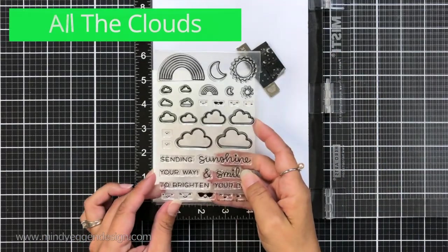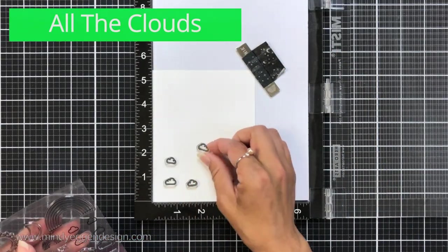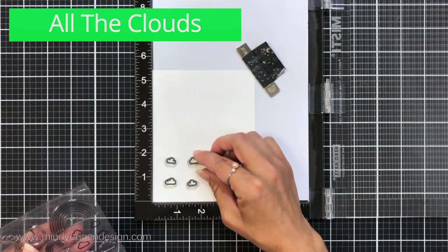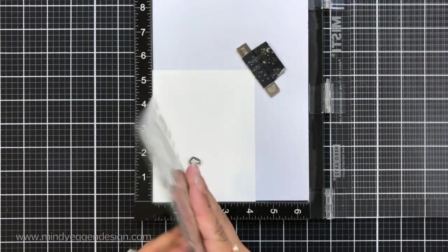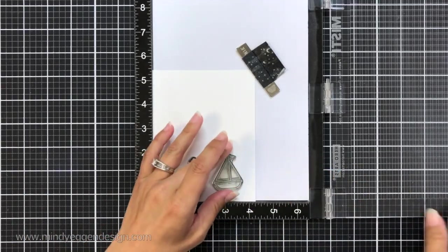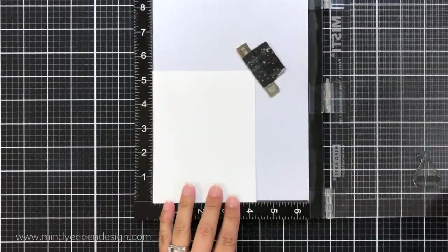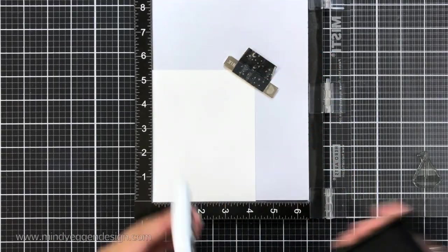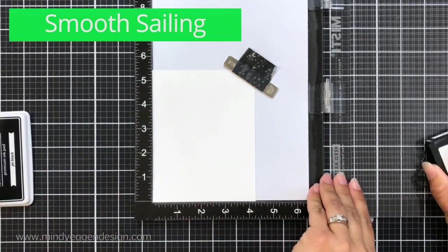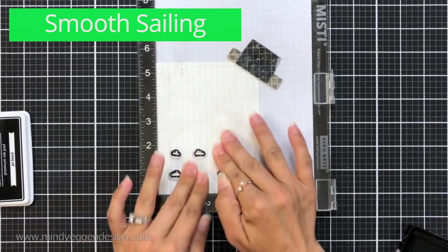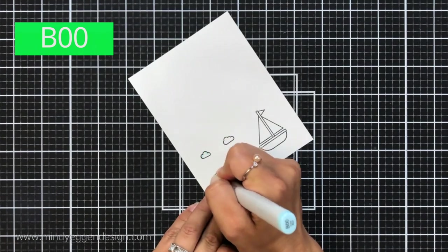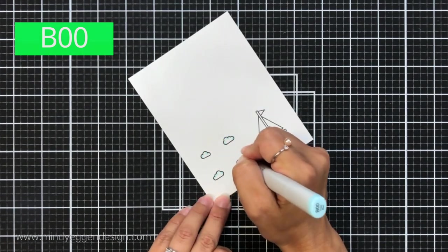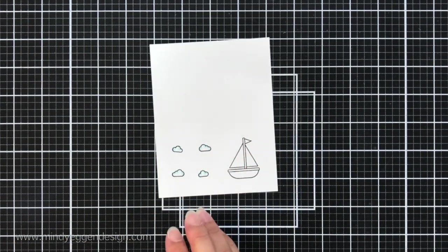Now I'll move on to working on some images for my scene. I'm using the stamp set All the Clouds which literally has all the clouds. It has so many different sizes. It's one of my new favorite stamp sets and it has these little tiny clouds that are perfect for the magic iris. I'm also using the stamp set Smooth Sailing and I used the sailboat out of that and I stamped all of that in the Lawn Fawn Jet Black ink which is Copic friendly.